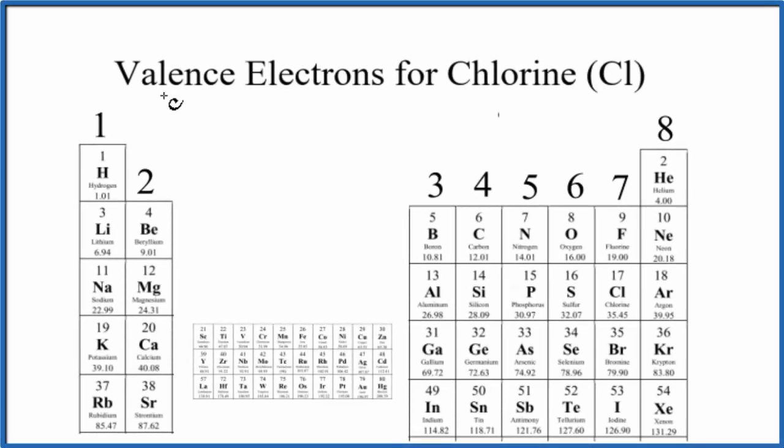There are two main ways to find the number of valence electrons for chlorine, Cl. The first is we can look at a pattern on the periodic table for valence electrons.